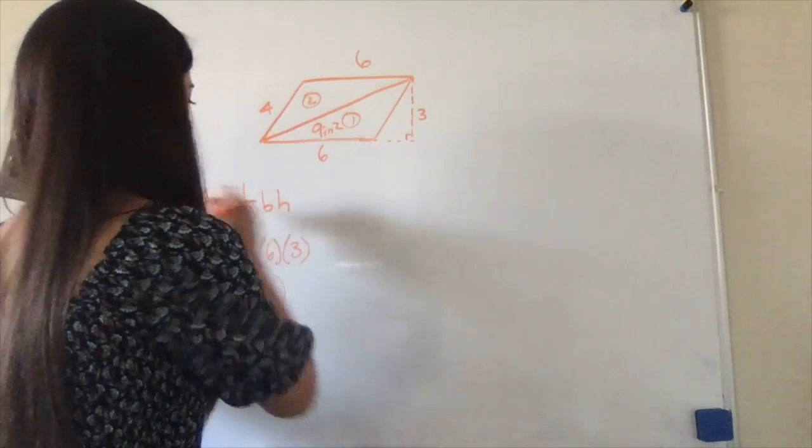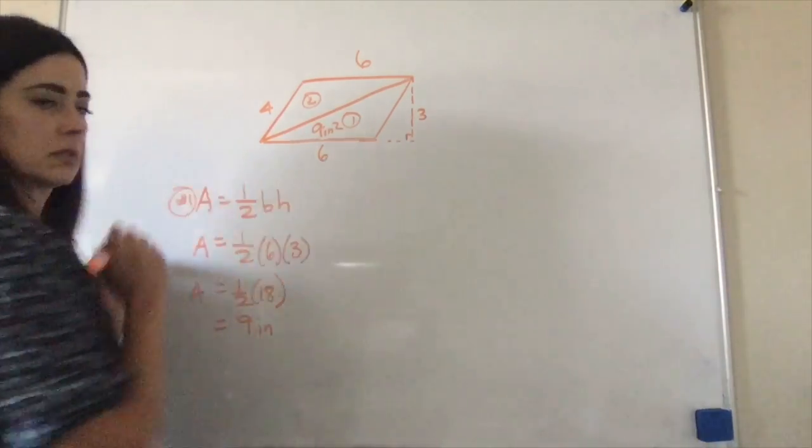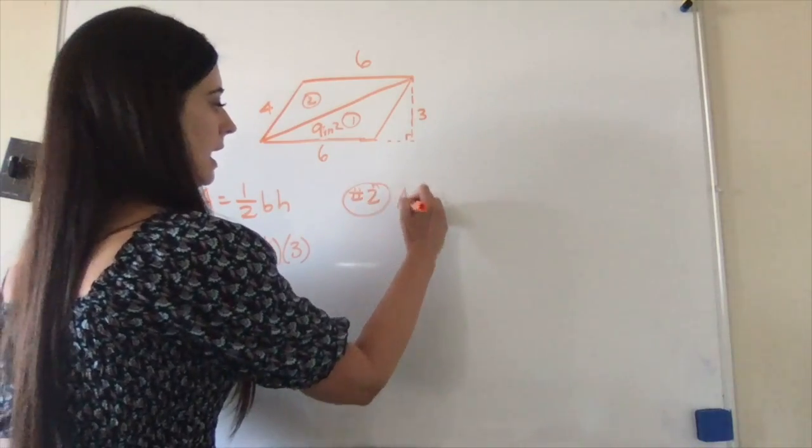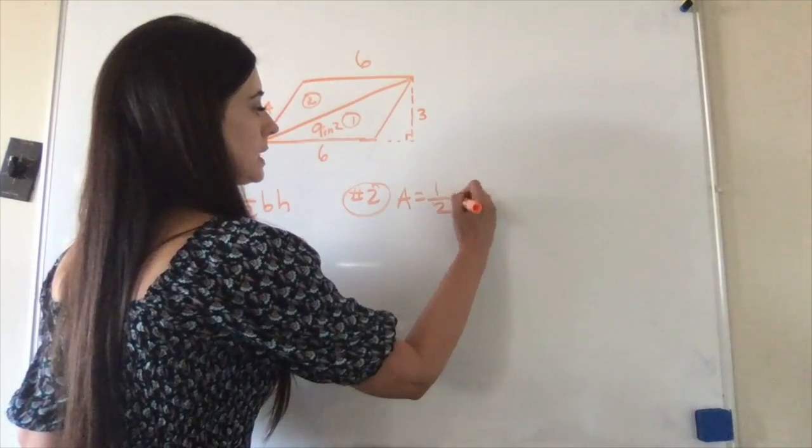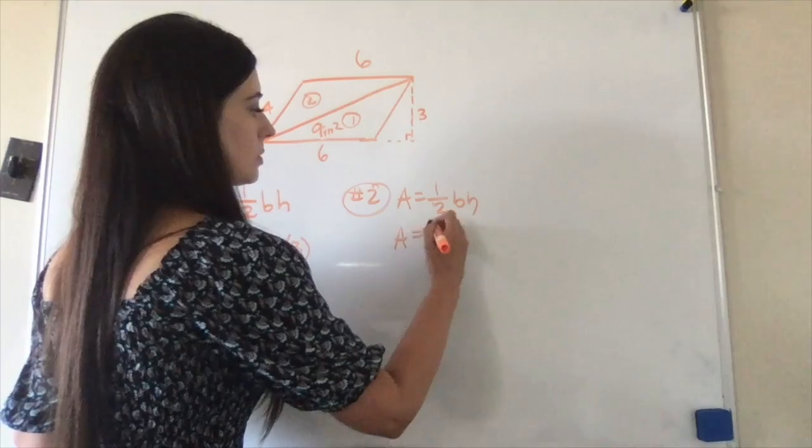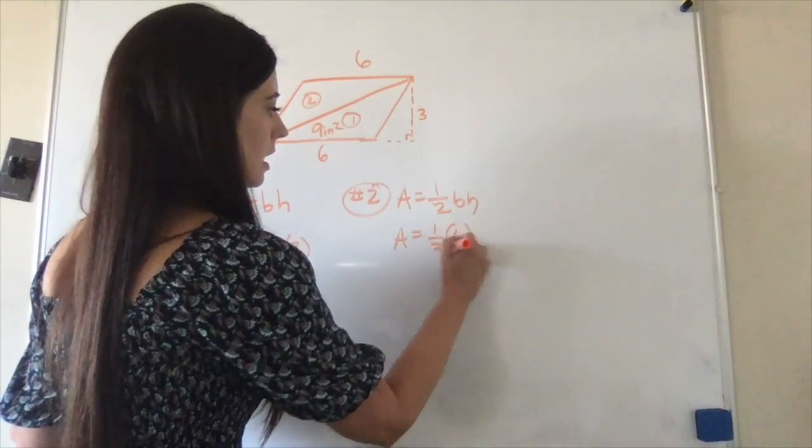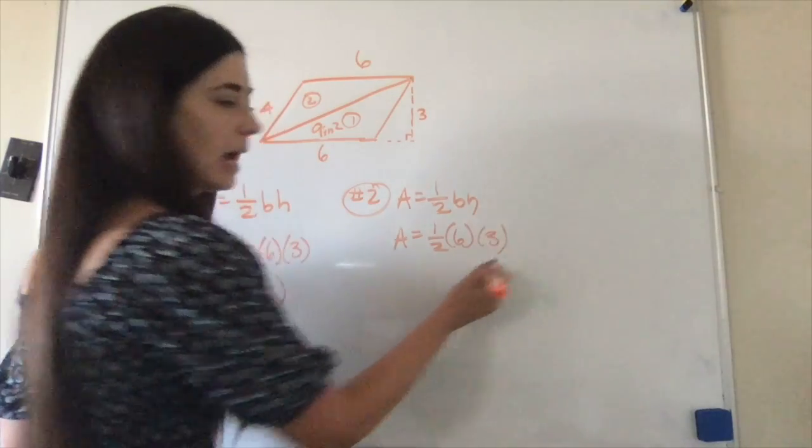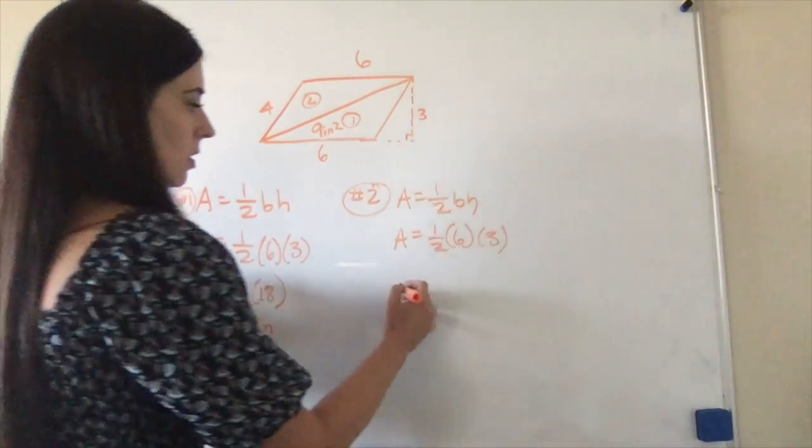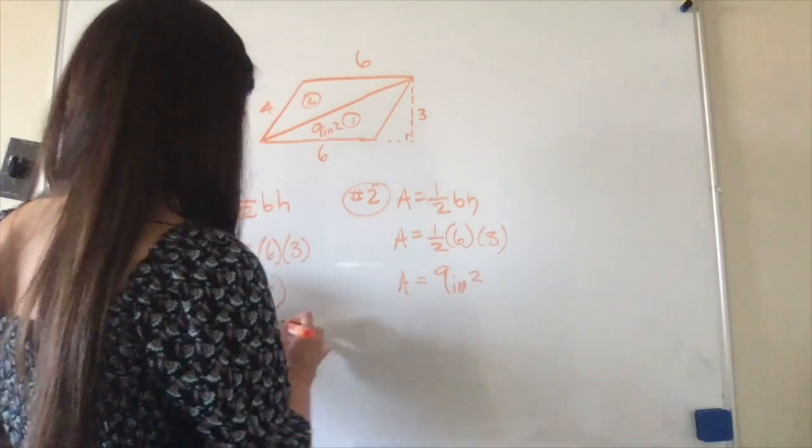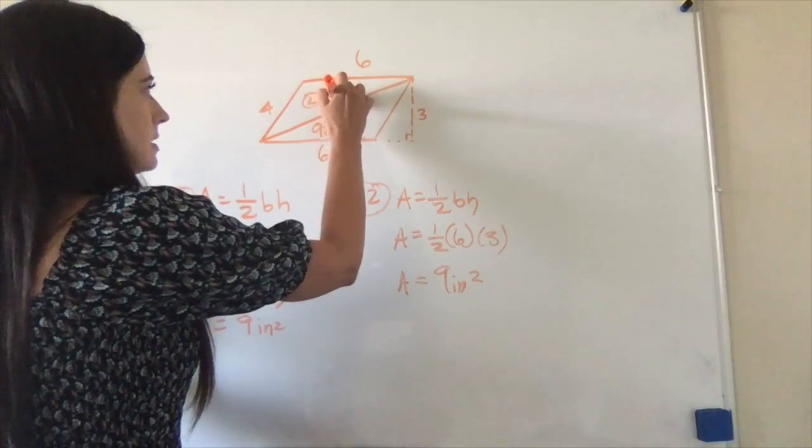Then let's do the second one. This is number one. Number two. A equals one-half B times H. A equals one-half. Our base is six. Our height is three. Are you seeing what's going to happen here? All right, so our area is going to equal nine inches squared.